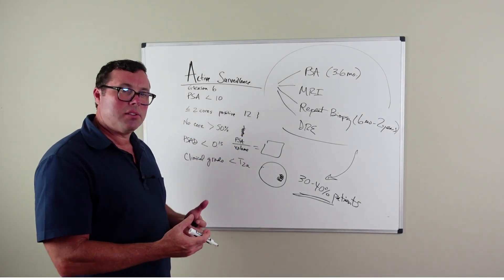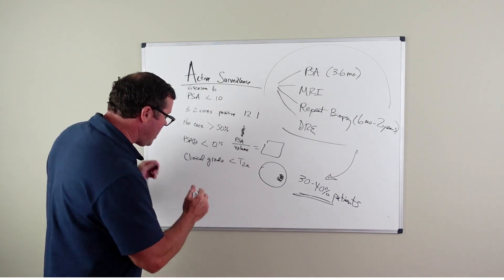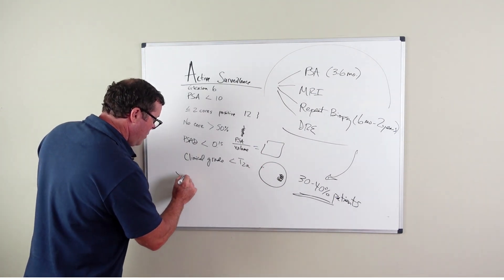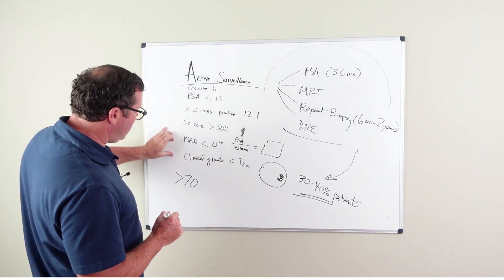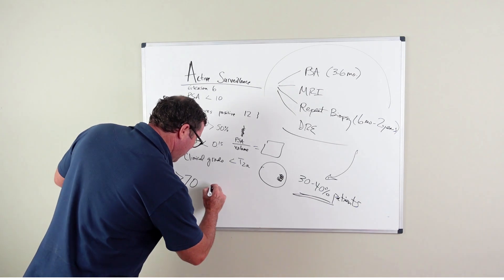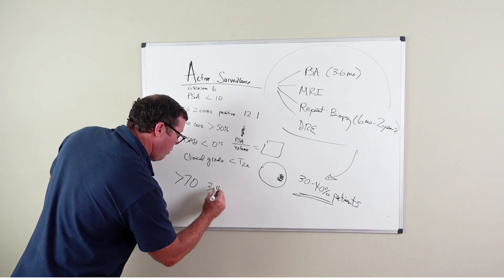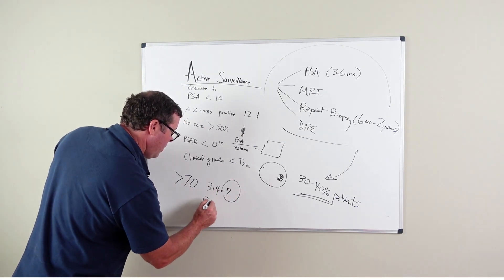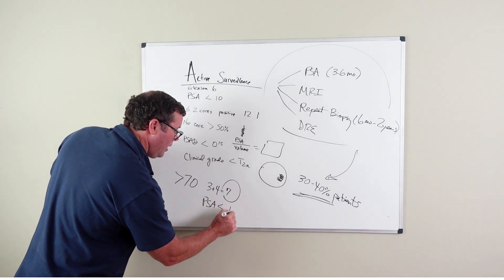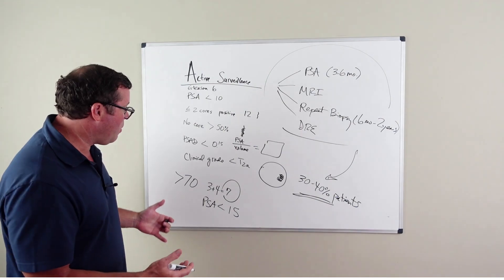So active surveillance is also extended to patients that are advanced in age. And so if you're greater than 70 years of age, this criteria can now include a higher Gleason score. So anyone with a three plus four equals seven Gleason score and a PSA less than 15, those patients can also be watched.